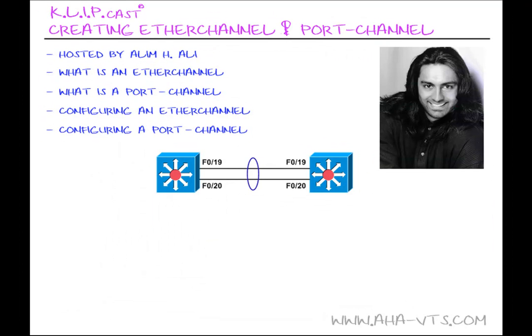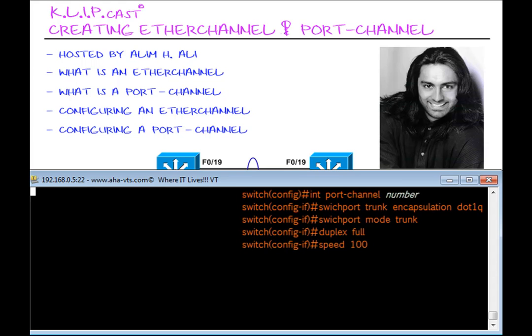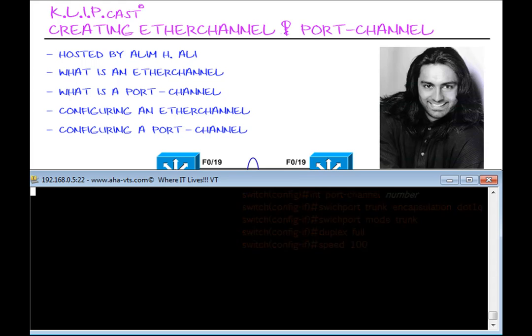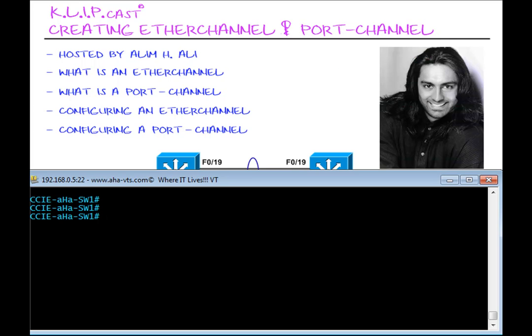As shown on the screen, I have two switches, Switch 1 and Switch 3, connected to each other via an Ethernet crossover cable to ports Fast Ethernet 0/19 and Fast Ethernet 0/20 on my Catalyst 3550 switches, and each port is running 100 megabits per second. Let me call up my terminal prompt, and I will be entering the following syntax in order to create the EtherChannel. I'm only going to do this on one switch — in this case Switch 1 — since the configurations are exactly the same on the other switch.